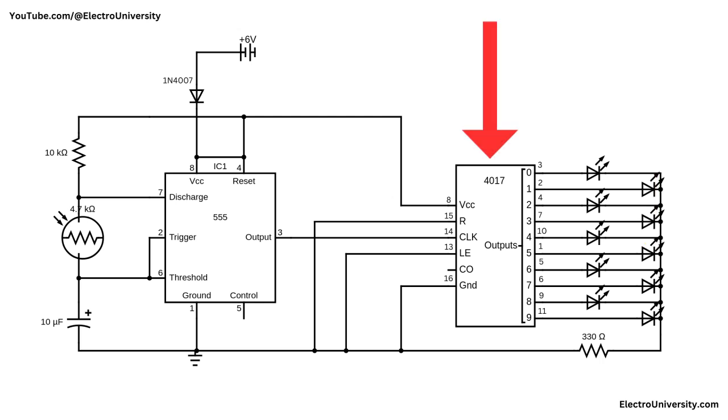The 4017 takes pulses from the 555 and activates its output pins one after another, Q0 to Q9. Each output is connected to an individual LED through a 330 ohms resistor. This creates the sequencing or chasing effect.